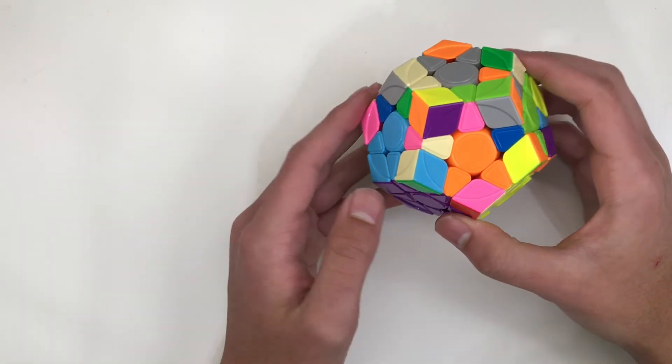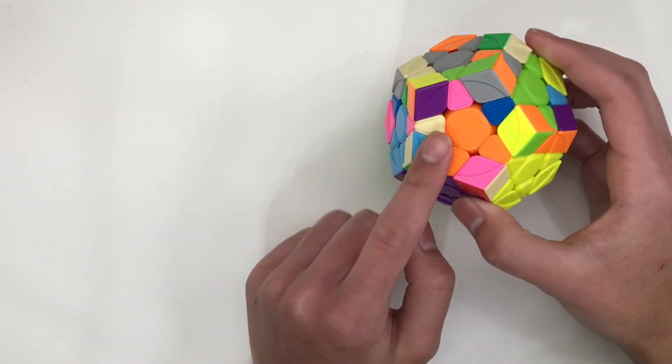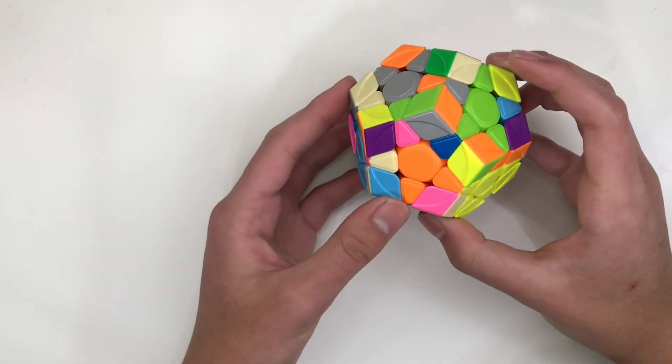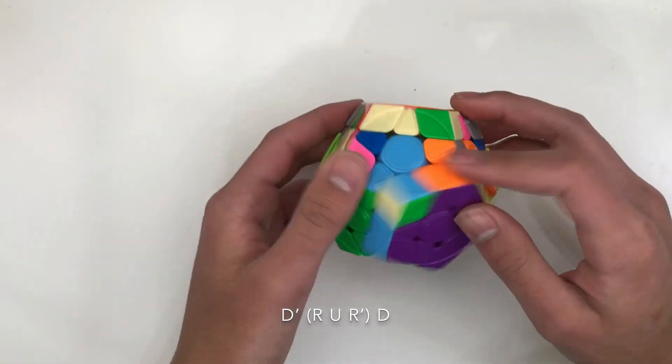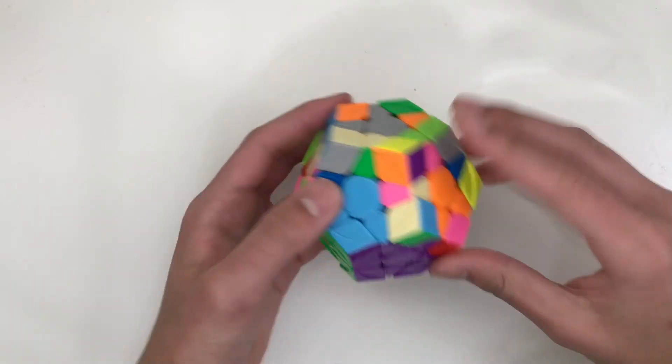This can also be super useful in S2L. For example, if you were going to solve this pair and you might just normally do one move to triple sexy, you can instead just do D' R U R' D. And that saves the rotation and a bunch of moves.